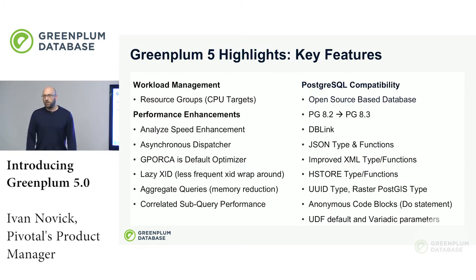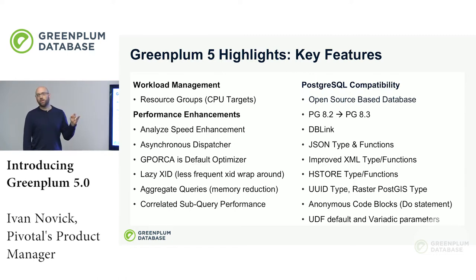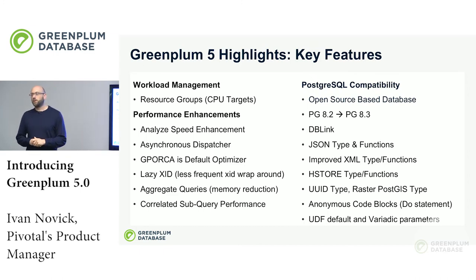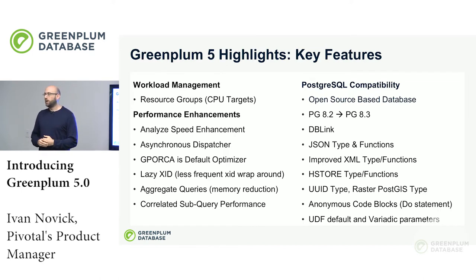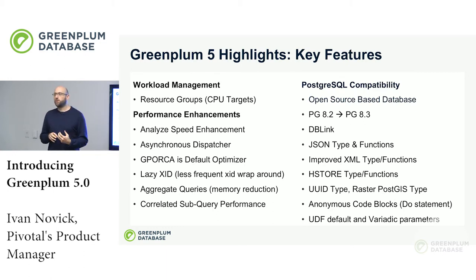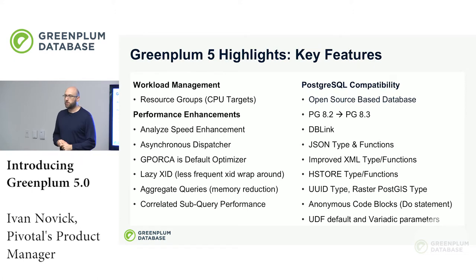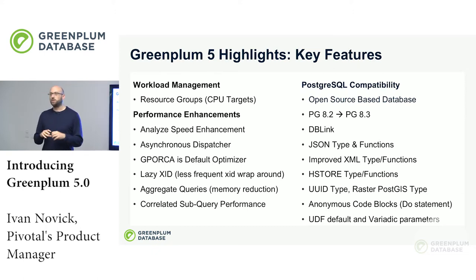What is Greenplum version 5 bringing? Three key areas. Number one is workload management. When you look at a complex system at a large corporation, the database is not a single-user system — it's a multi-user system. The key is how do we share the system and divide the resources among everybody? In Greenplum 5, we introduce resource groups, which leverage underlying Linux cgroups to segregate the resources of the system and set policies that you can use to allocate percentages.